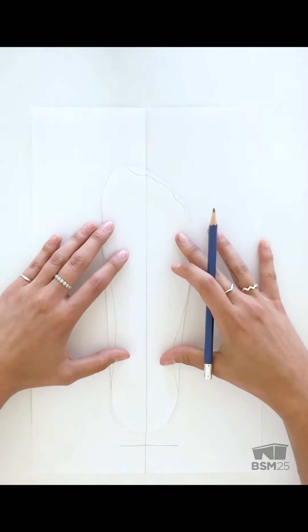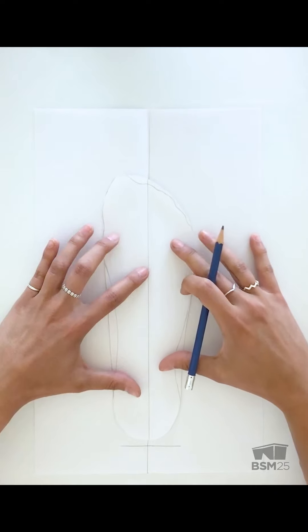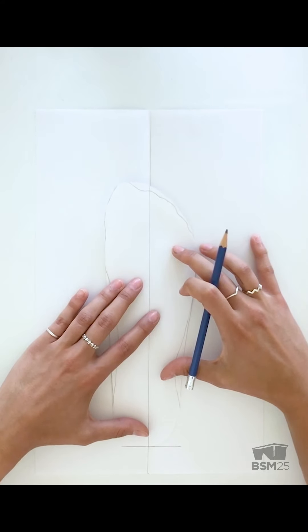For the next step, mark a 1 inch guideline up from the bottom of the paper. We're going to take our foot cut out and match up the center line with the center line of the paper, making sure that the heel matches at that 1 inch guideline.